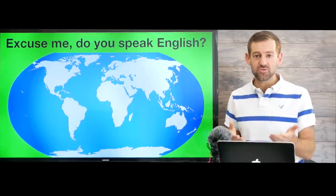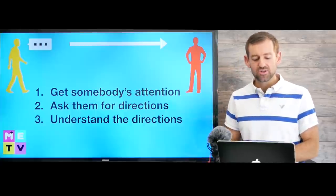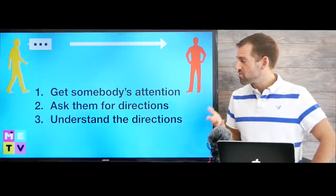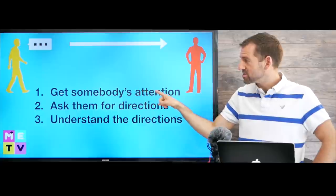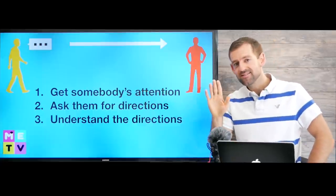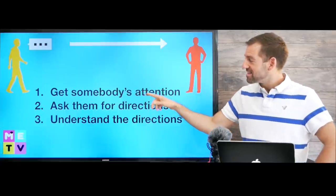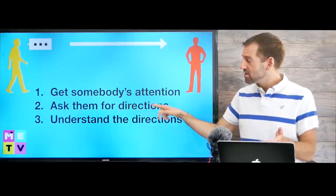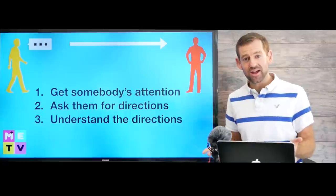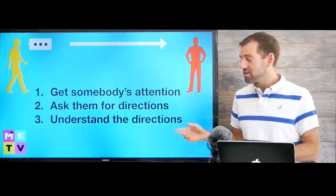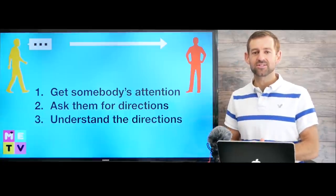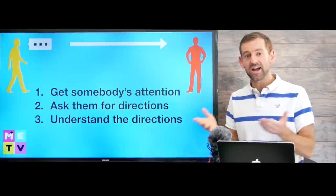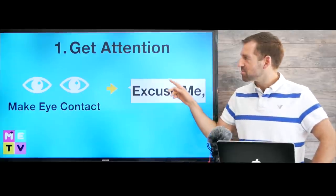So there are three steps to asking for directions. First, you need to get someone's attention — "Hi, excuse me." Next, you need to ask them for directions. Then you need to understand the directions. And then you should probably thank them — "Thank you so much for your help" — and then go find whatever you're looking for.